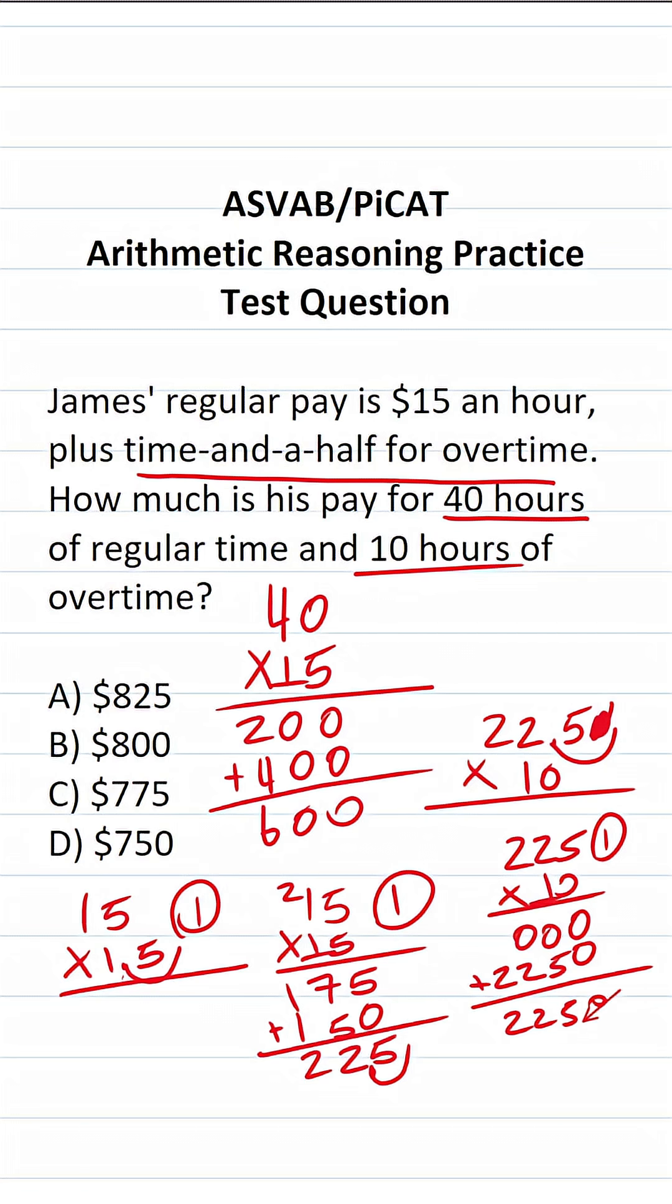Plus the $600 he made for regular time, that's going to give us a total of 0 plus 5, which is 5. 2 plus 0, which is 2. 6 plus 2 is 8. It's going to give us a total of $825 in earnings. So that one's going to be A.